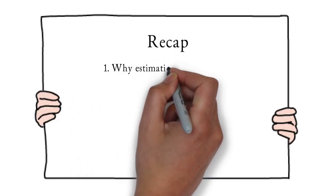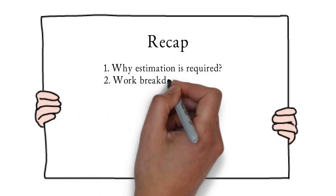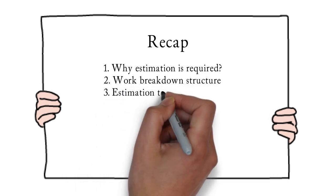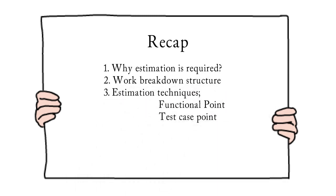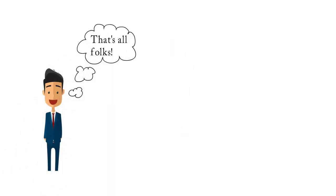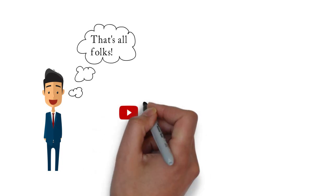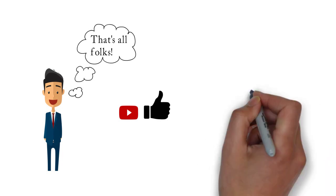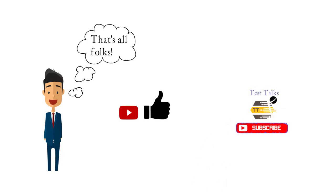To recap, we have seen about why estimation is required, what is work breakdown structure, and the different estimation techniques like functional point analysis and test case point analysis, including a worked example of functional point analysis. I hope this session helps you understand the different estimation techniques used in software testing. If you like this session, please click the like button and subscribe to my channel Test Talks. I'll be coming up with many more videos on software testing — please keep an eye on it. This is Sherin signing off, thank you.